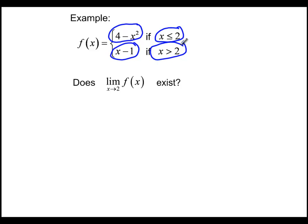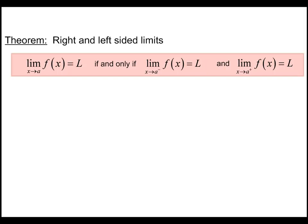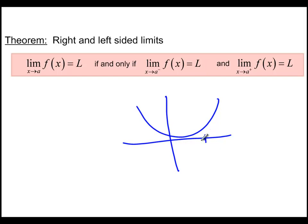The question is, how do we take the limit as x goes to 2 for this function? None of our limit laws so far directly address this. We have a theorem about right and left-sided limits. If we have a picture of our graph, and we're trying to take the limit at a point, from the left side we're looking at numbers coming from below that point, and from the right side we're looking at numbers that are a little bit bigger than our point.